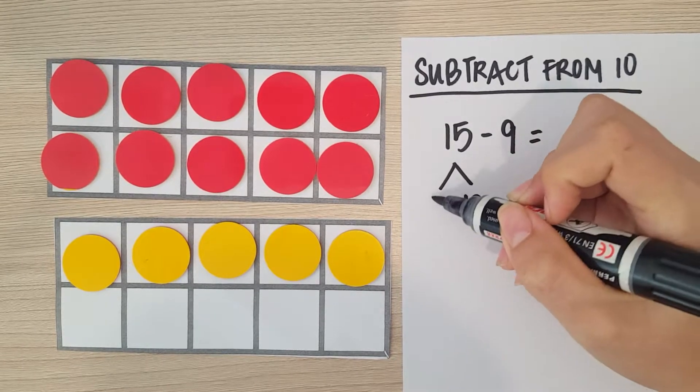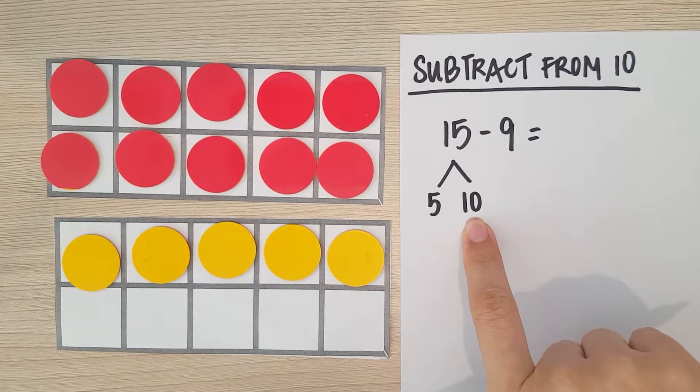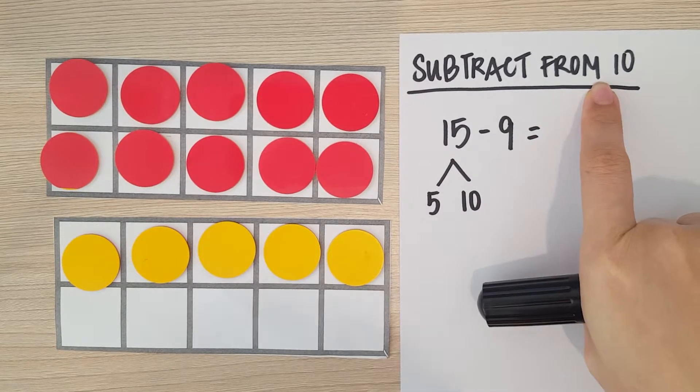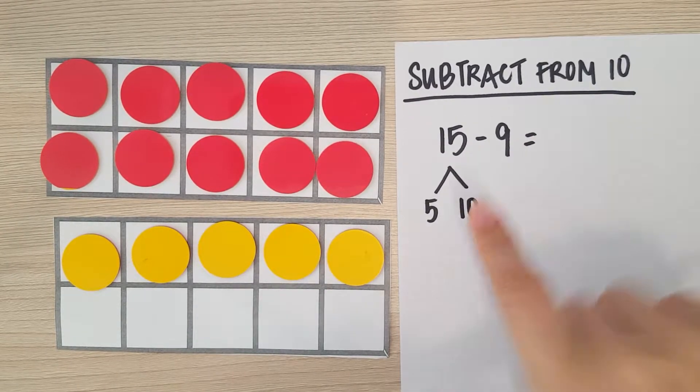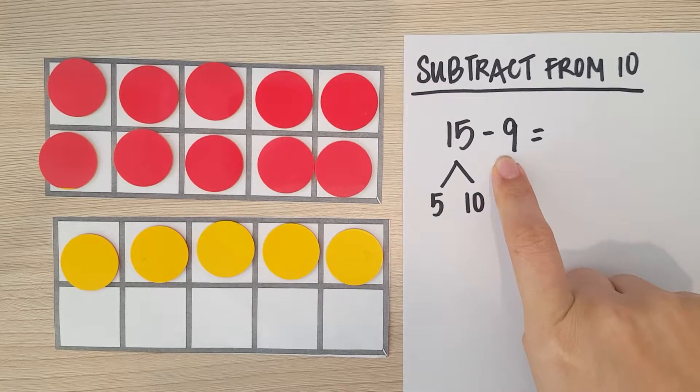I'm going to write 10 and 5. I'm choosing to put the 10 on this side because I know in the end I'm going to subtract from 10. Okay, so I have to take away nine counters.